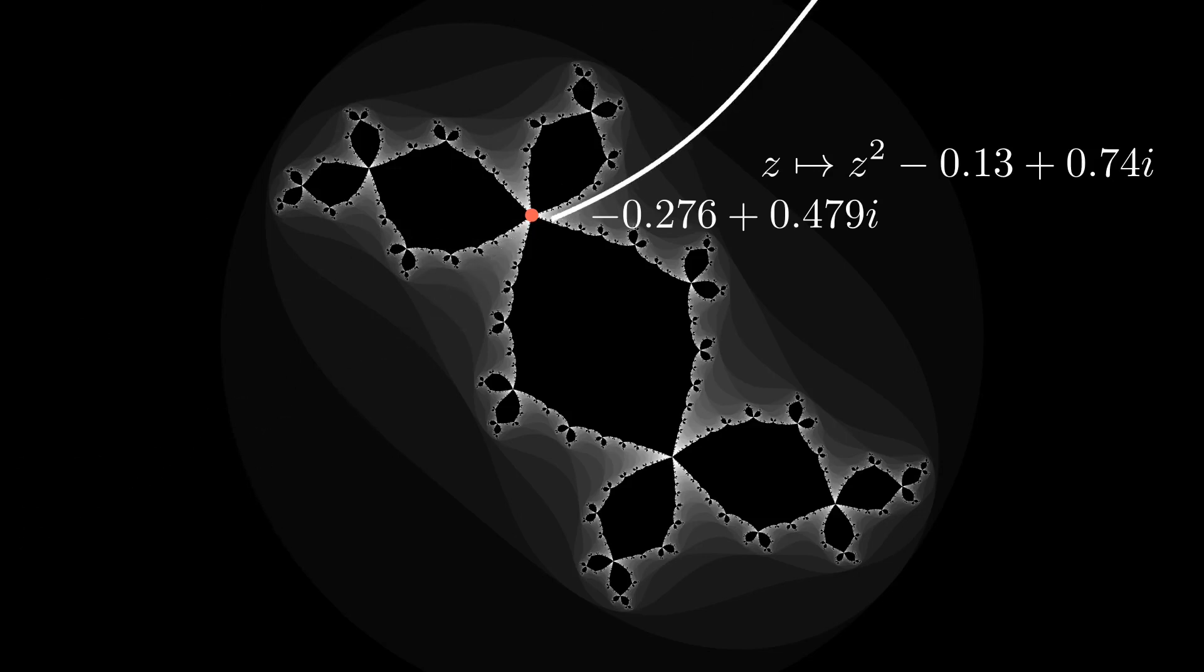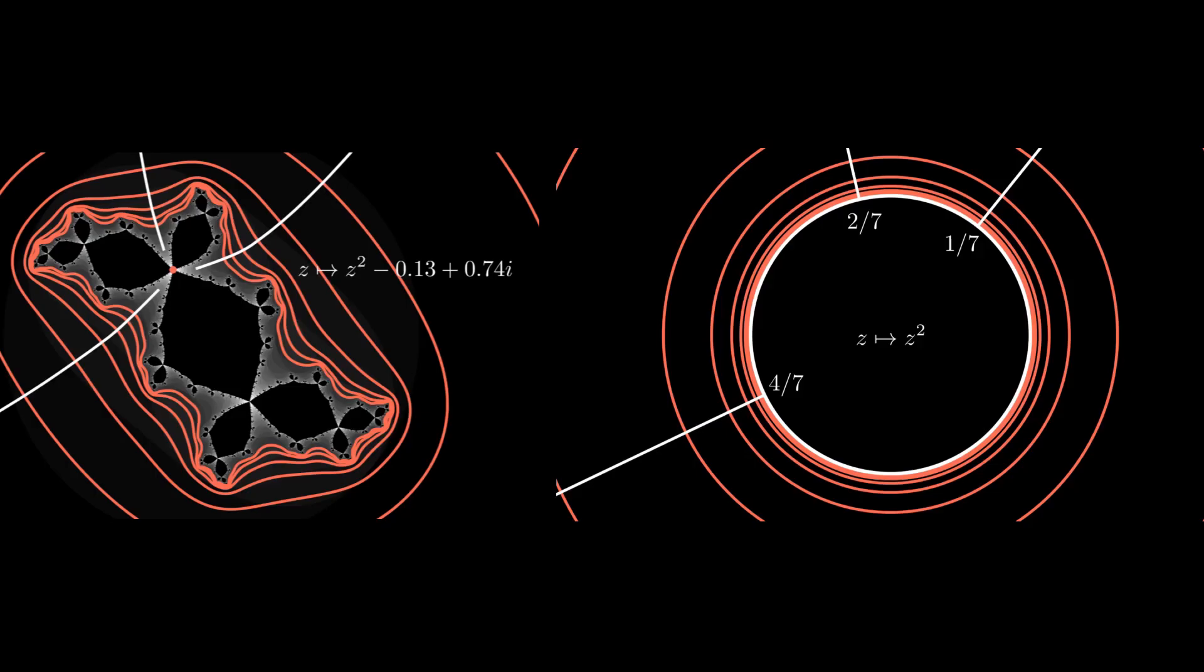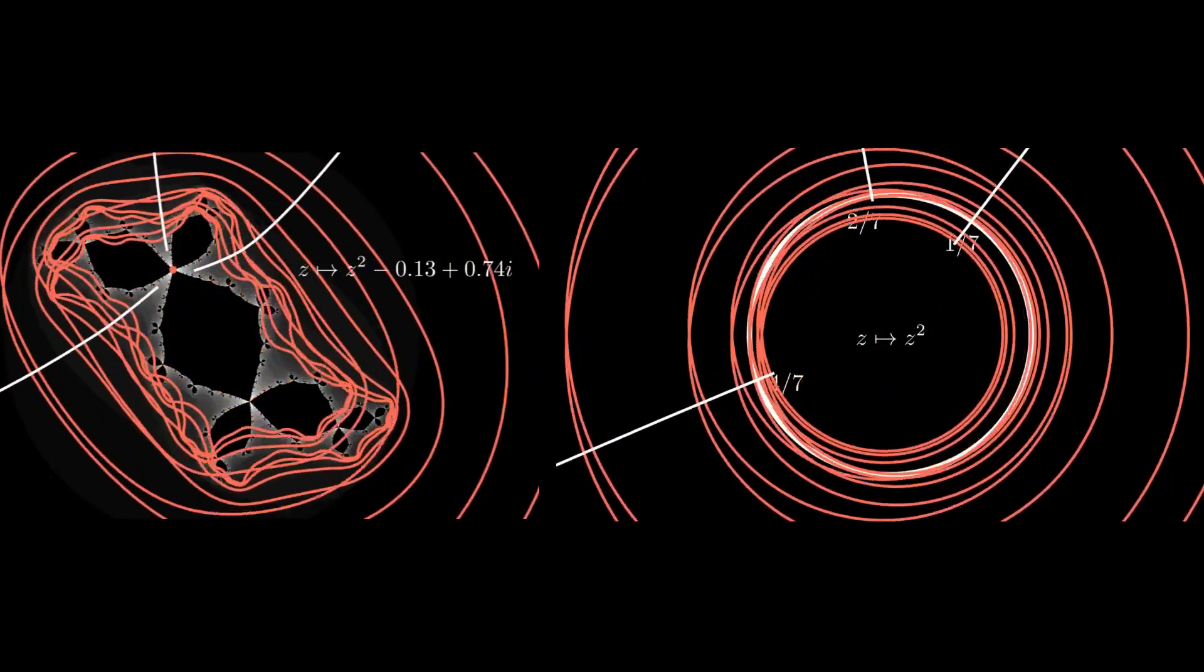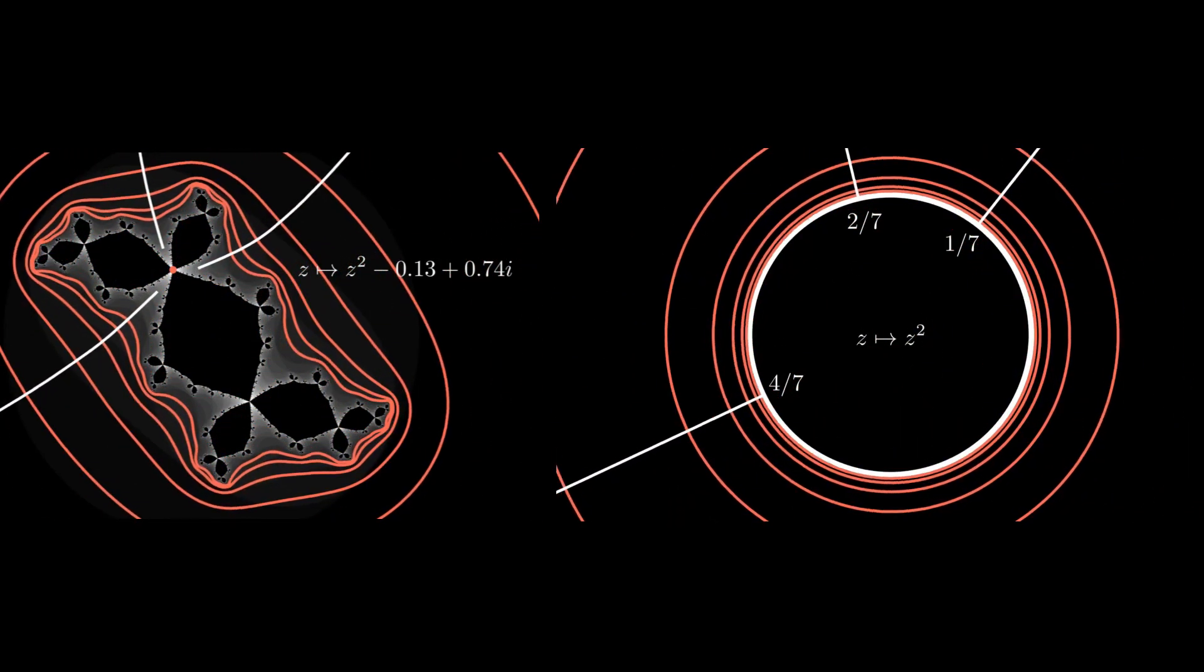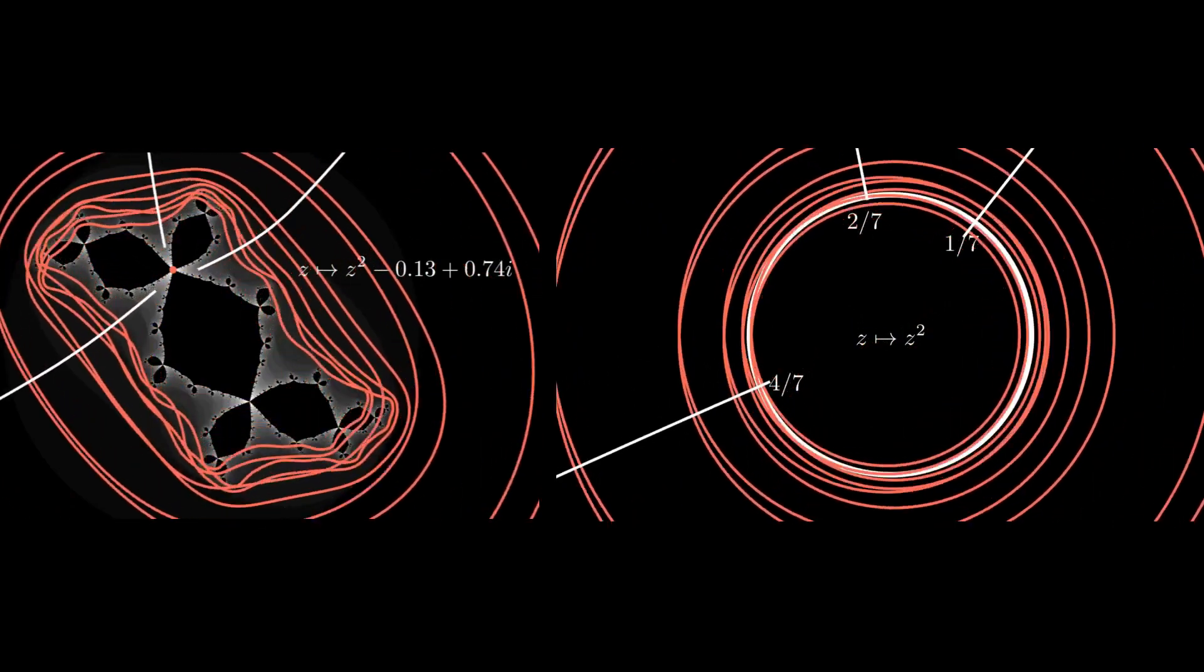Iterating the polynomial, we see that the external rays that hit this fixed point are period 3. The conjugacy tells us that whatever rays these external rays correspond to must also be period 3 under z squared.